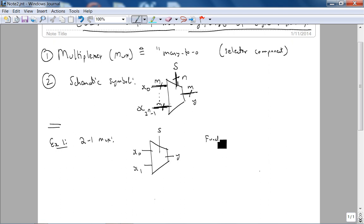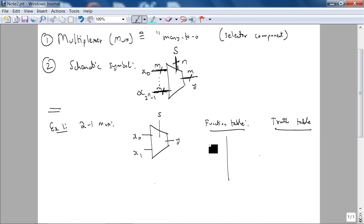So the function table, I'll write out a function table and then I'll write out the truth table. Now you can see why we use a function table. When s is 0, y is x0, and when s is 1, y is x1. That describes the functionality of the circuit. If you want to write out a truth table, you have to write out all the inputs and the outputs, so in this case you actually have three inputs.